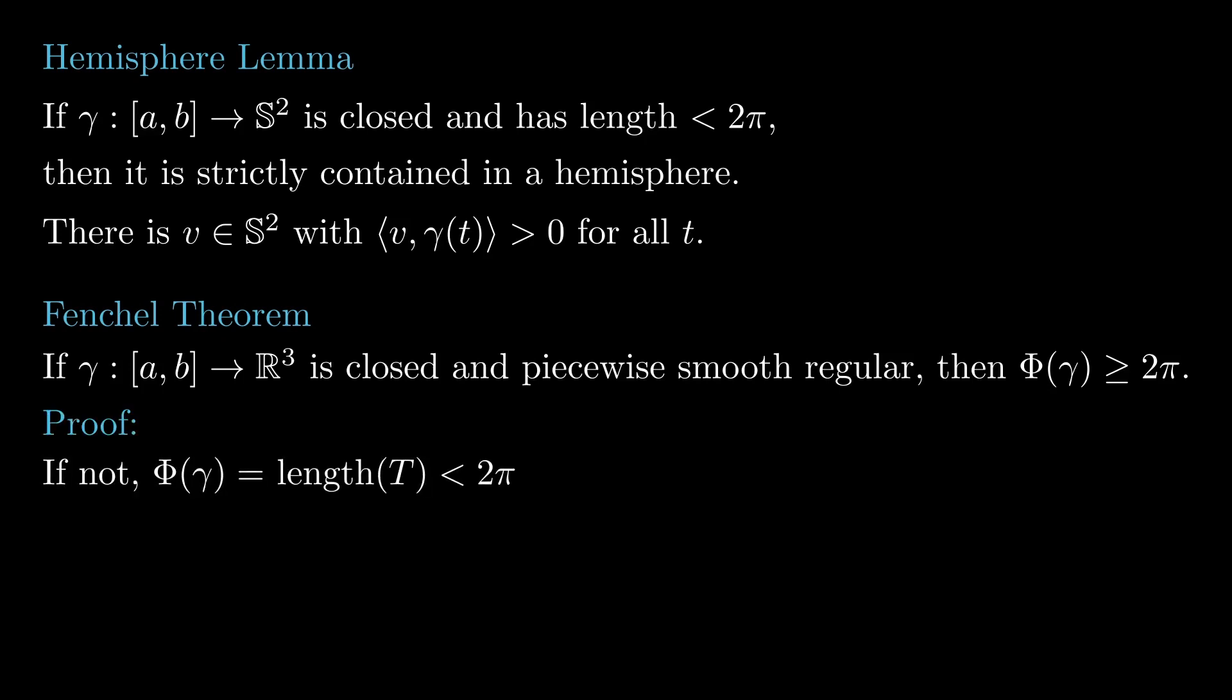To see this, recall that the total curvature of gamma equals the length of its tangent indicatrix, so if the curvature was less than 2π, by the hemisphere lemma there would be a direction v such that the dot product between v and t is positive for all time. Integrating this with respect to time, we get a contradiction since gamma of a equals gamma of b.